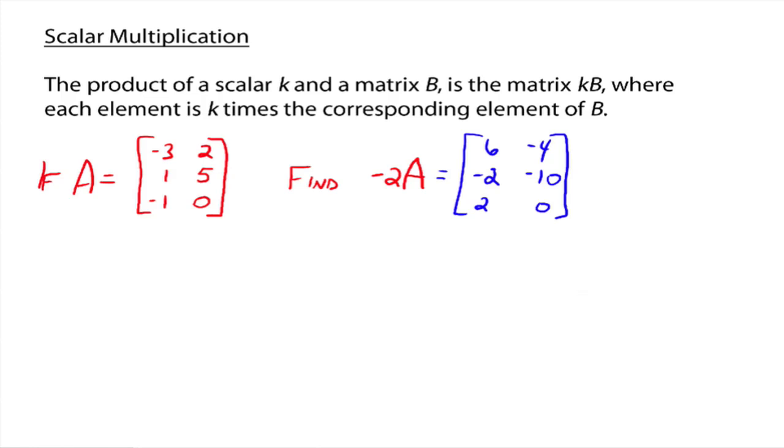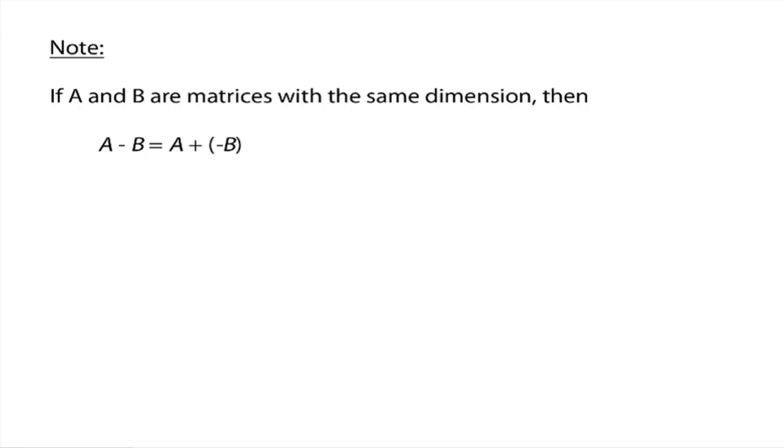Now, because of that, that allows us to now talk about subtraction. If A and B are matrices and they have the same dimension, then we can subtract the two matrices. Because remember, you can think of A minus B as A plus a negative B, and you have that negative 1. That would be a scalar multiplied times B, and so you could run that through.